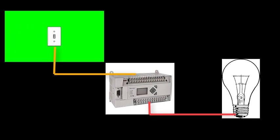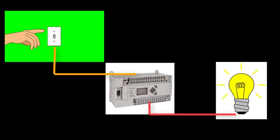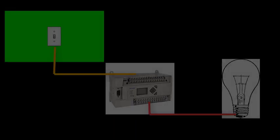Here we see a simple light switch act as an input. The PLC interprets it and turns on the output appropriately.